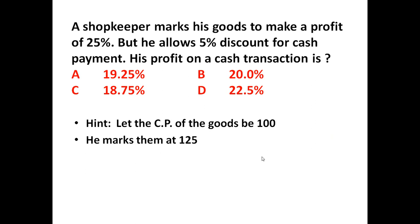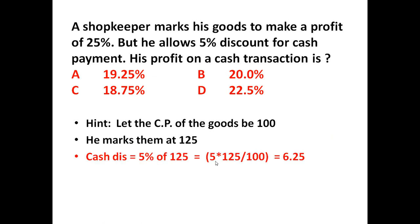Rupees 125 will be his marked price, that is 25% of rupees 100. But he allows 5% discount on this marked price. Marked price is 125, and 5% of 125 is equal to 5 into 125 divided by 100, that is 6.25. So if he is offering 5% discount, it means he is offering a cash discount of rupees 6.25.